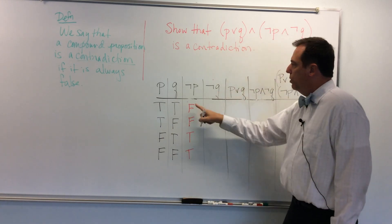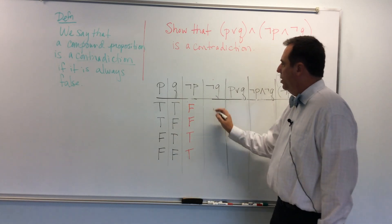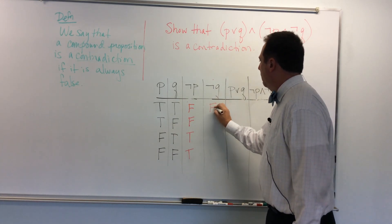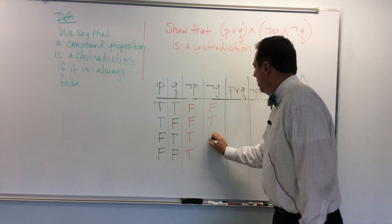Now, not Q is a negation of the column of Q. And that's going to be false, true, false, true.